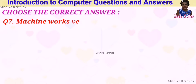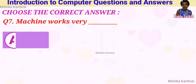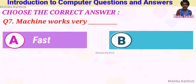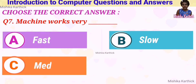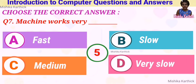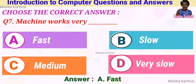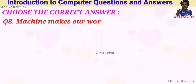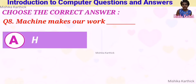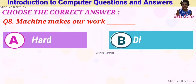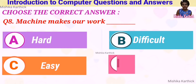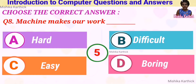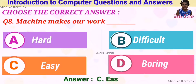Question 7: a machine works very dash. Options: A. Fast, B. Slow, C. Medium, D. Very slow. Answer: A. Fast. Question 8: a machine makes our work dash. Options: A. Hard, B. Difficult, C. Easy, D. Boring. Answer: C. Easy.